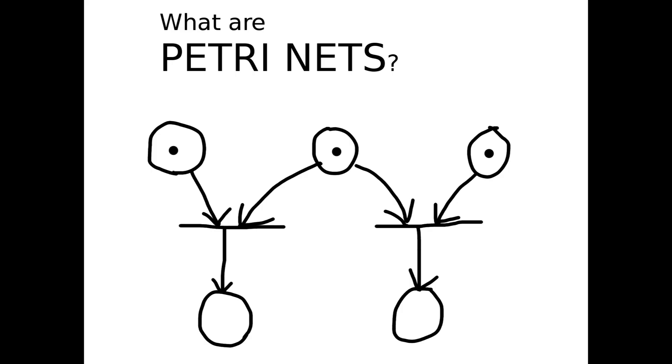If a token provides input to more than one transition, then the network is non-deterministic. A token on that place may trigger a firing of either destination transition.